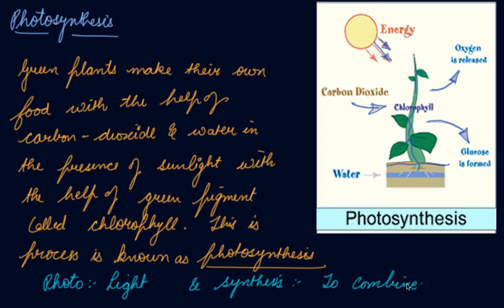Oxygen, which is essential for the survival of all living organisms, is produced during photosynthesis. In the absence of photosynthesis, life would be impossible on earth. During photosynthesis, chlorophyll in the cells of leaves uses carbon dioxide and water to synthesize carbohydrates.